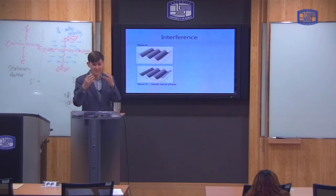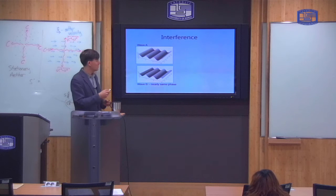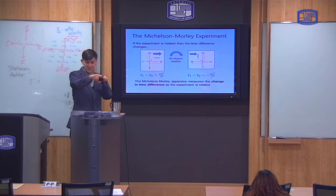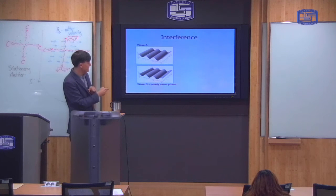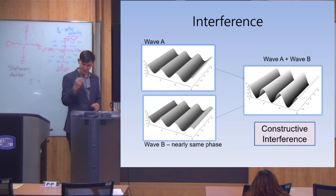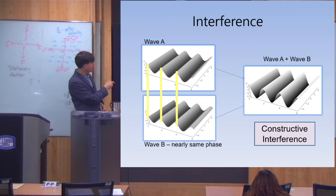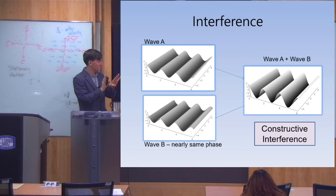Now let me explain how the interferometer works — how you measure this very small change in time difference. It's all to do with the wave nature of light. I've got two light waves coming into the apparatus, one going along the orange path and one along the pink path, and they are combined in the interferometer. If both waves are in phase — when this wave is up, this wave is also up — then when you add them together you get a big wave. This is known as constructive interference.